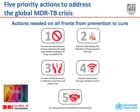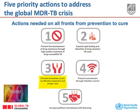There are five priority actions to address the global MDR-TB crisis. Number one is to prevent its development by using the best possible standards of care for normal tuberculosis. Number two is to expand laboratory capacity and rapid testing. Number three is to provide immediate access to effective second-line treatment.